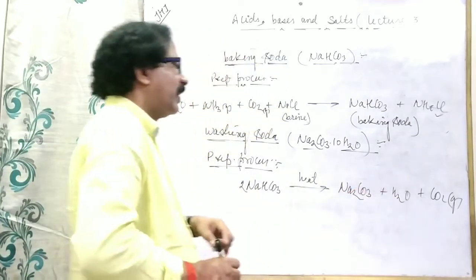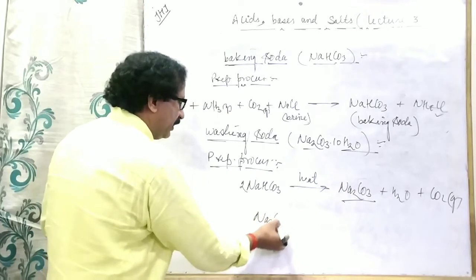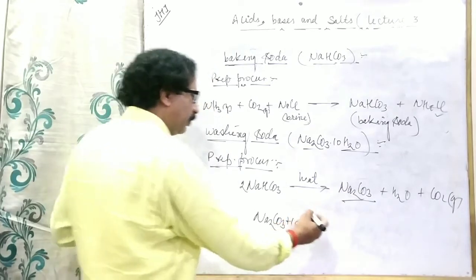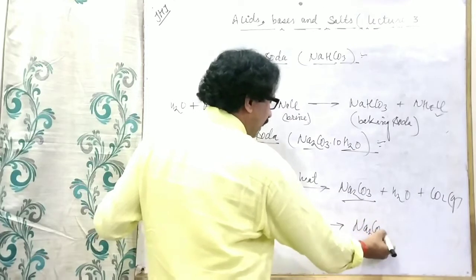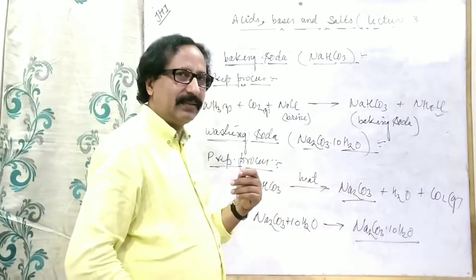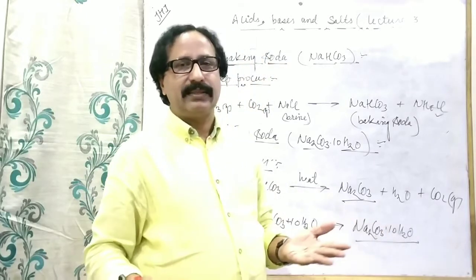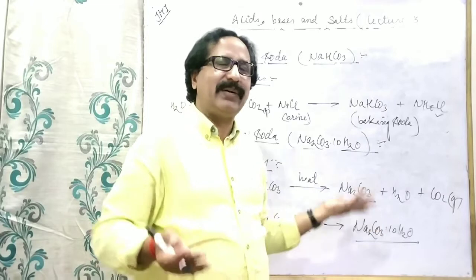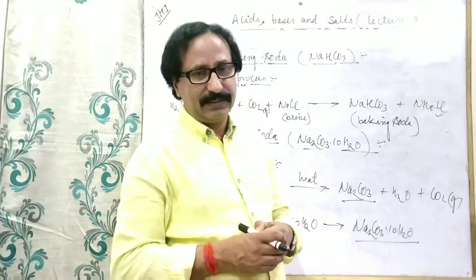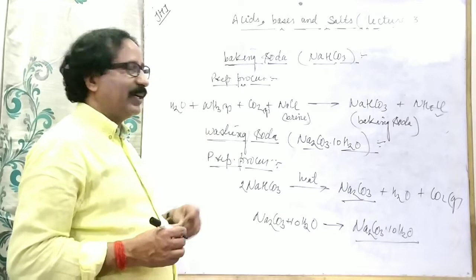On heating baking soda, Na₂CO₃ is formed, and H₂O and CO₂ are formed as by-products — it is already balanced. This is sodium carbonate, and further it absorbs 10 moles of water to become Na₂CO₃·10H₂O, which is then known as washing soda. It is also used for the formation of different carbonate salts. Other applications are given in the PDF — both baking soda and washing soda.